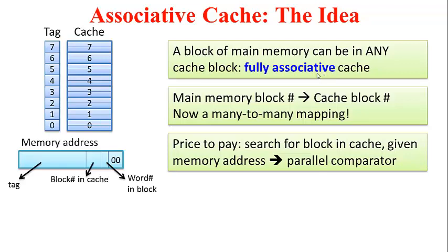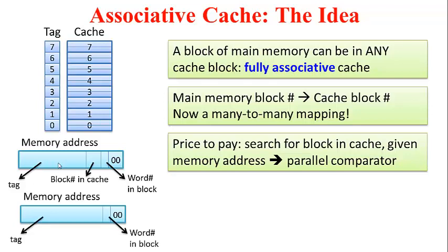In the earlier direct-map scheme, the memory address had a field for word number in block, a field for block number in cache, and the remaining MSB bits as the tag. Now in the fully associative scheme, there is nothing in the memory address to indicate the block number in cache, since that address could be mapped to any block. So we retain the word number in block field, and all remaining bits correspond to the tag. Not only has the number of comparisons increased, the number of bits to be compared — that is the tag size — has also increased.